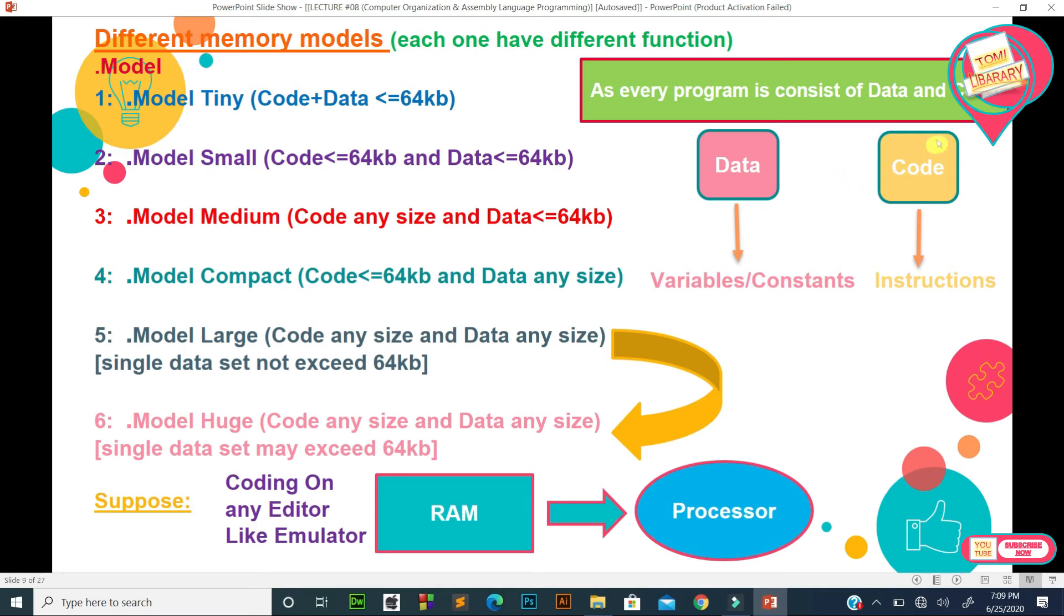Every program is mainly split into two parts: code and data. Code means the part in which instructions are written, and data is the part in which variables and constants are defined. As every program consists of code and data parts, suppose this is RAM. How will we reserve space in RAM? When we write coding on any editor like emulator, we consider two parts: code part in which instructions are defined, and data part in which variables and constants are defined. When the program runs, first of all, instructions and data will go into RAM, means memory will be allocated. After that, the processor will access instructions from RAM and execute them.